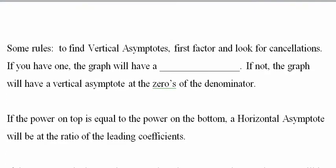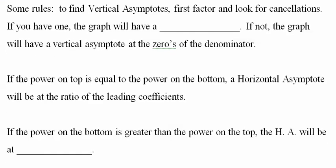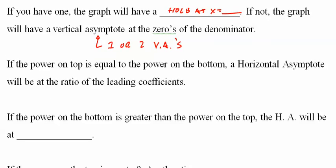This is a lot to kind of grasp, but that's okay because you've got that calculator to bail you out. Here's the rules I wrote up, which I rarely do. To find the vertical asymptotes: first factor, look for cancellations. If you have a cancellation you're going to have a hole, and the hole will be at x equals something. If there's no hole, then you have either vertical asymptote. You could have one or two.